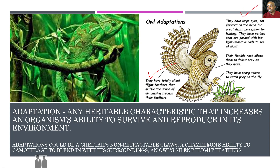Second, they have large eyes set forward on their head for great depth perception for hunting, with retinas packed with low-light sensitive rods to see at night — meaning owls can track prey in almost any environment. Third, their flexible neck allows them to follow prey as they move. Fourth, they have very sharp talons to catch prey on the fly. All of these adaptations give owls the ability to survive and reproduce in their environment.